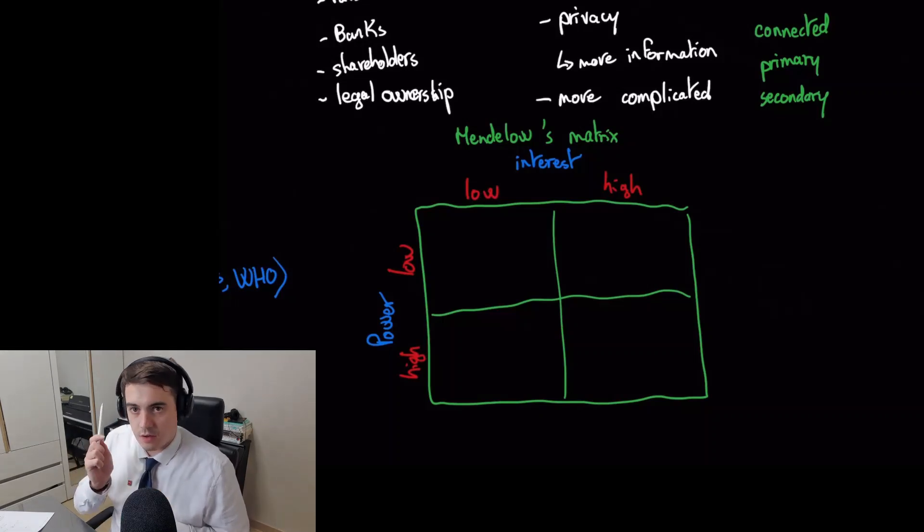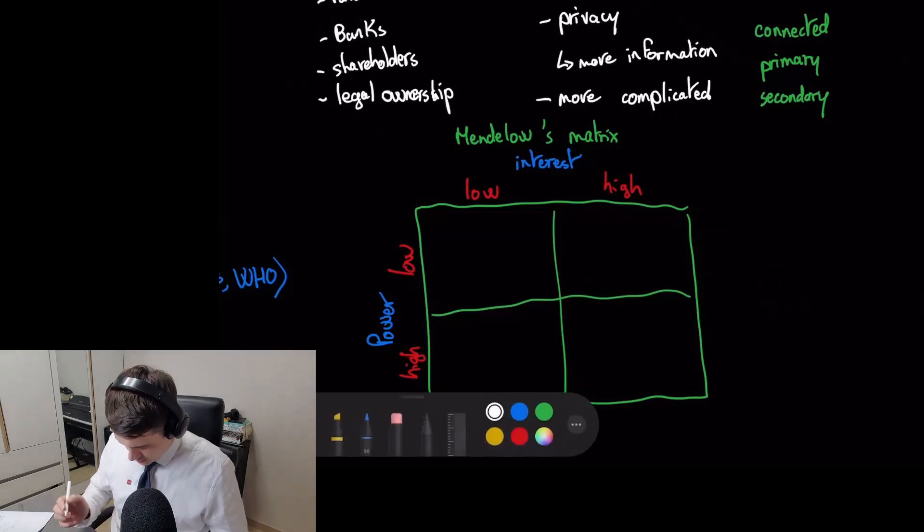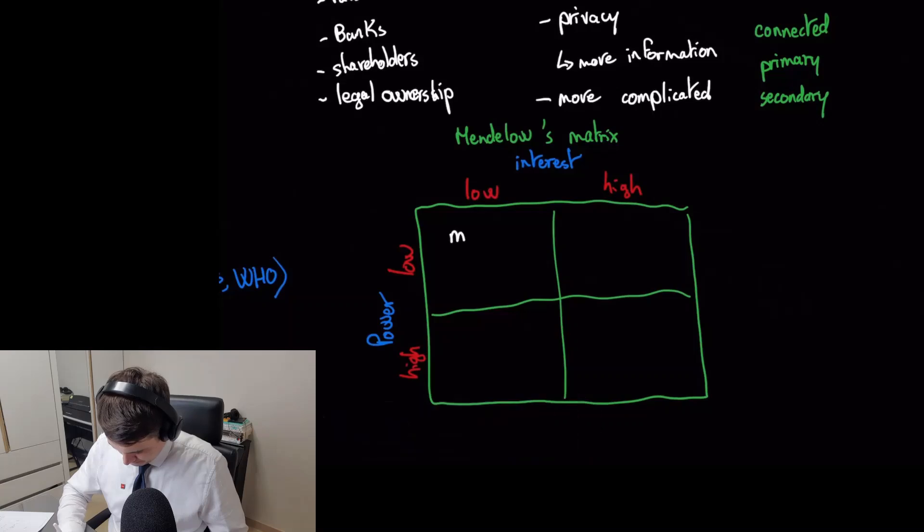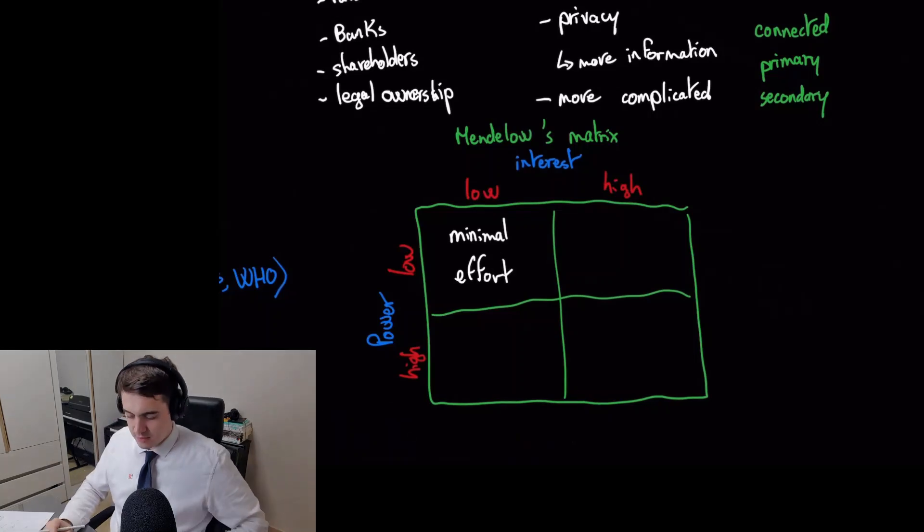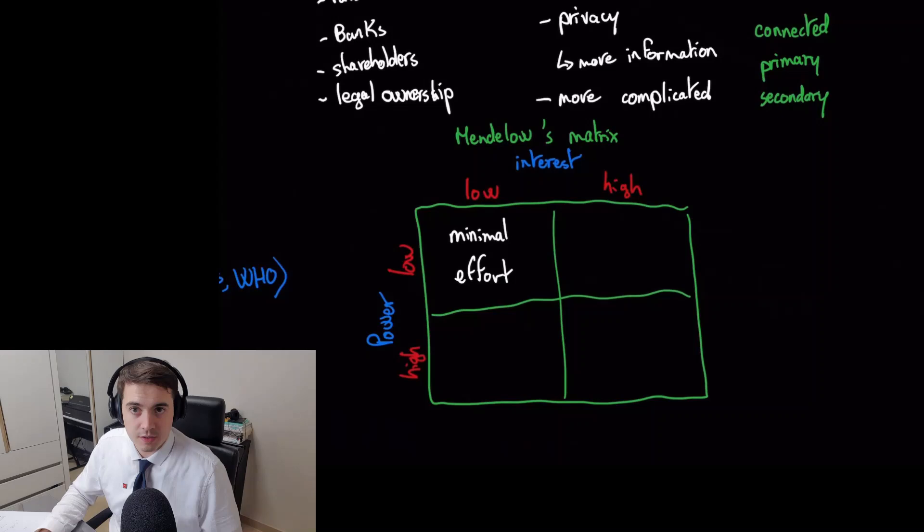So if we look at the box in the top left, they have low interest, low power. They would be considered minimal effort—you do the least amount of effort for them because they don't care, they don't have power over your business, they don't have any impact.